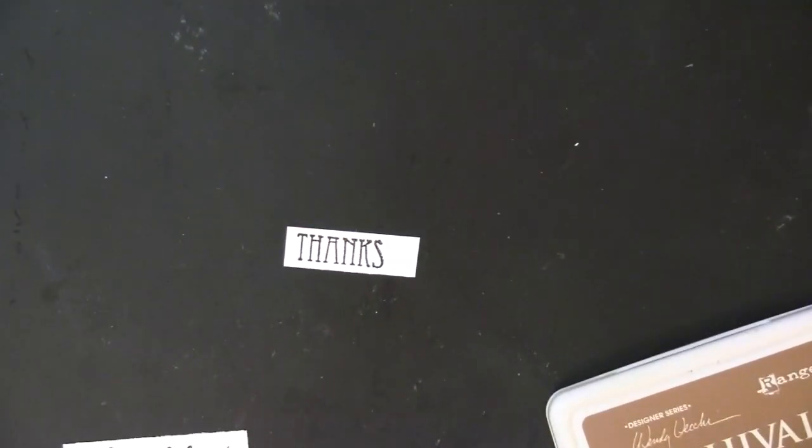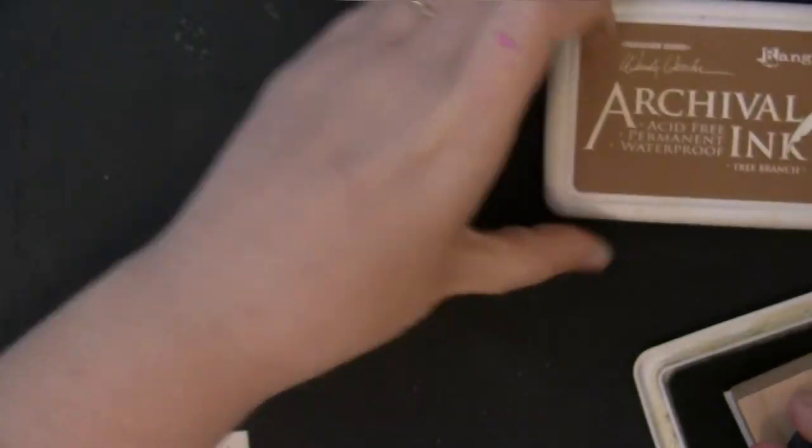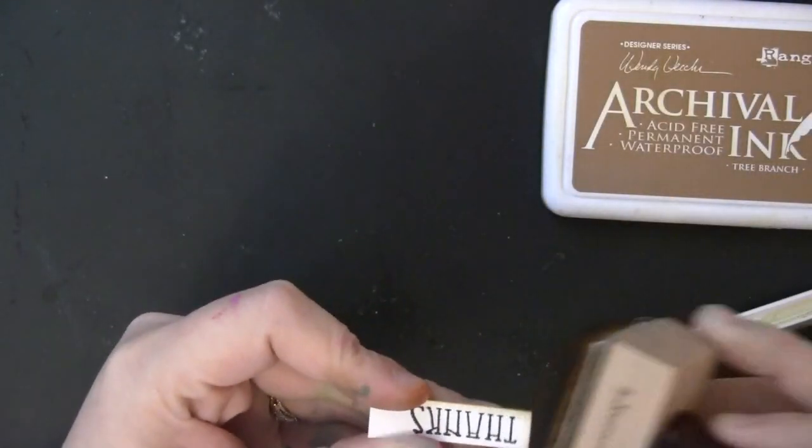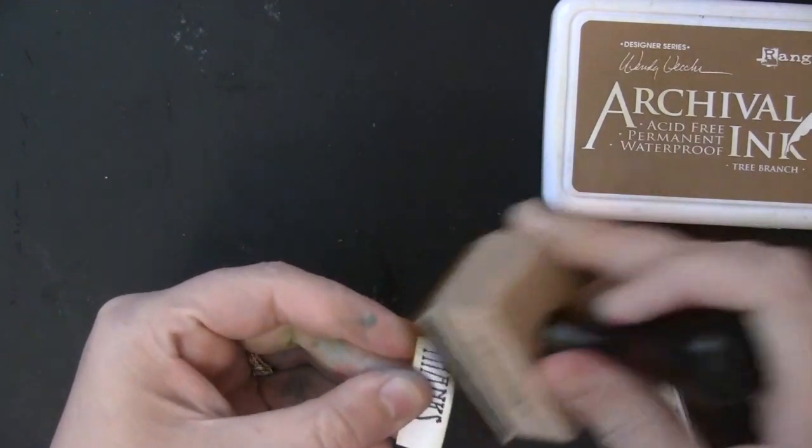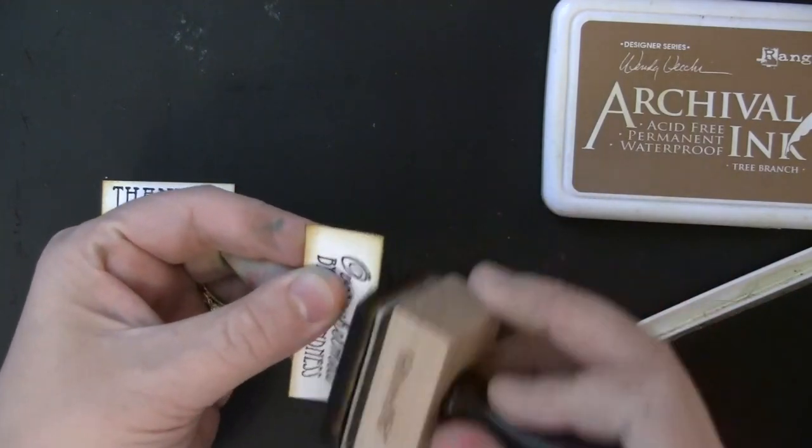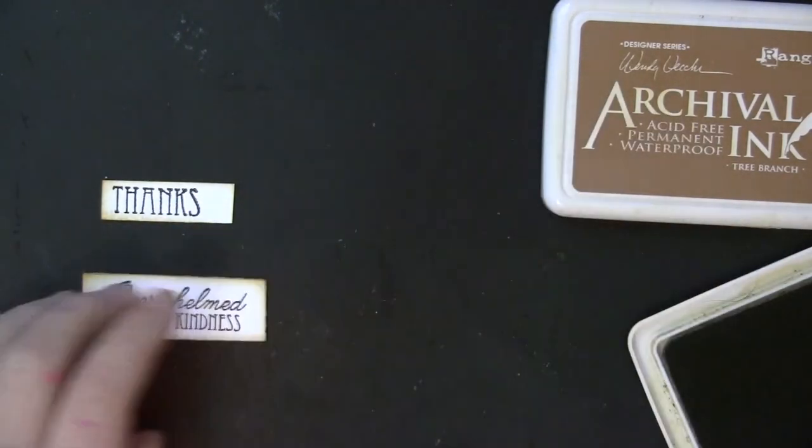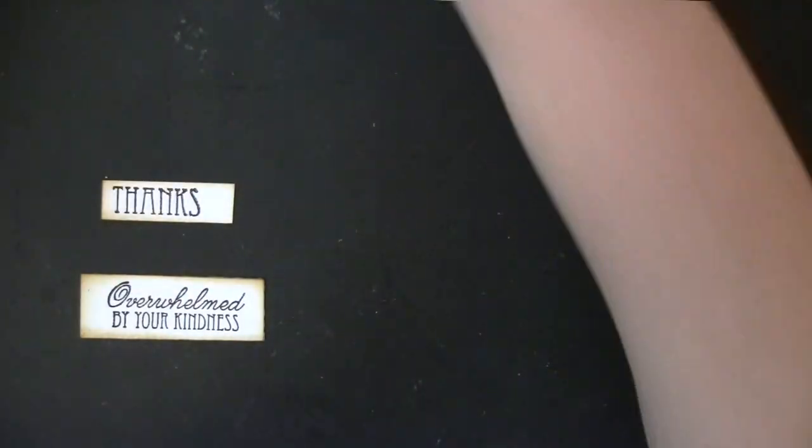Now these are my sentiments, these are from the Foliage Fancy set, and I stamp them using Versafine Onyx Black Ink, that's my favorite ink for stamping sentiments, and then I'm adding just a little bit of ink to the outer edge of those, I'll use Tree Branch Archival Ink,